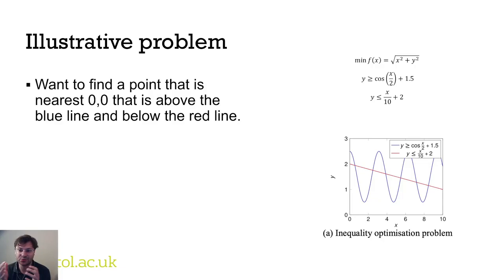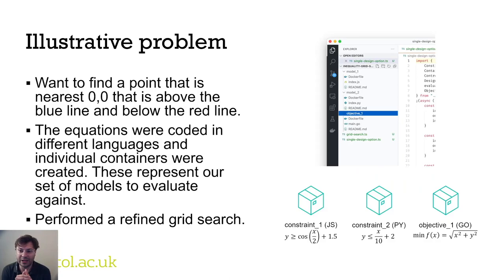With the approach proven in principle, we wanted to evidence it with a proof of concept. We applied our approach to a simple constraint-based problem typical of a getting-started tutorial — finding the x, y point that lies below the red line while being above the blue line, and as close to (0,0) as possible. We created images for each of the functions, coded in different languages for demonstration: one in JavaScript, one in Python, and the objective function in Golang.